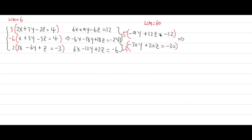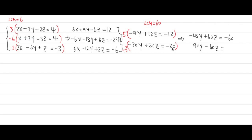Multiplying the first equation by 5: negative 45y plus 60z equals negative 60. Multiplying the second equation by negative 3: positive 90y minus 60z equals 90.